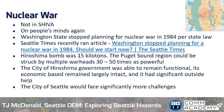One frequently asked question: why isn't nuclear war in the SHIVA? Washington State has not done nuclear war planning since 1984, due to political decisions of the 1980s. More practically, the odds of Seattle city government being able to do anything meaningful after a nuclear war are very remote. While Hiroshima's government remained functional after one 15-kiloton bomb, Seattle would face multiple far more powerful warheads, with no intact economic base or outside help. That is why nuclear war is not on the hazard list.